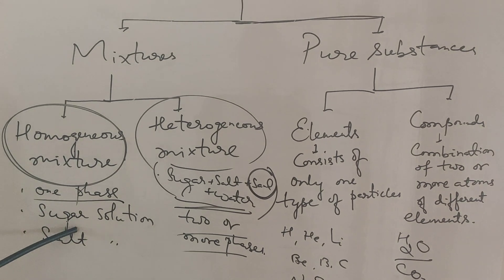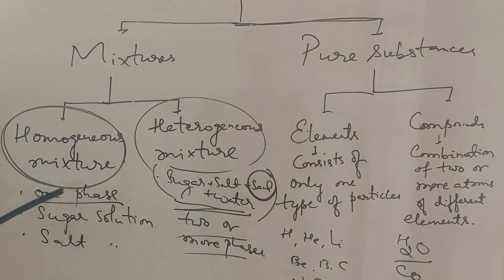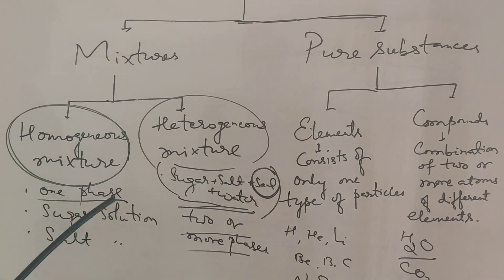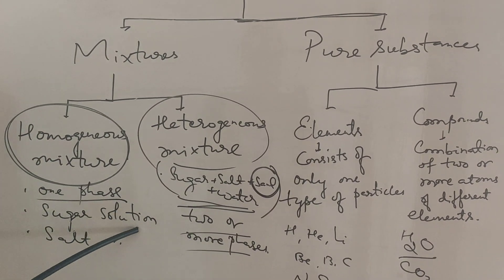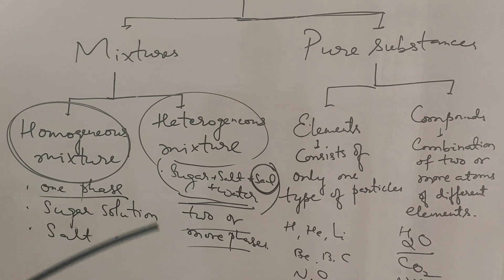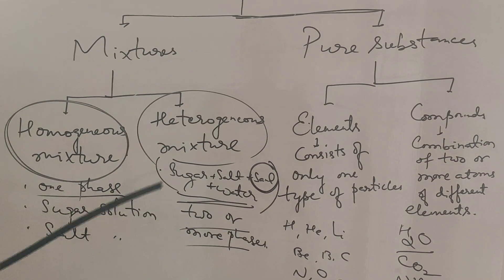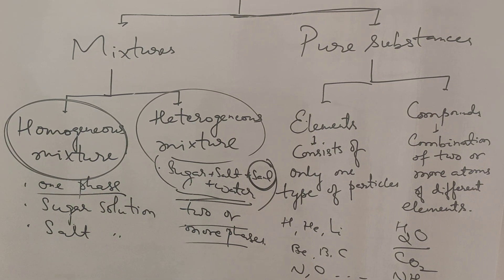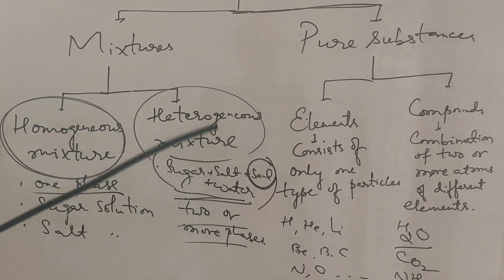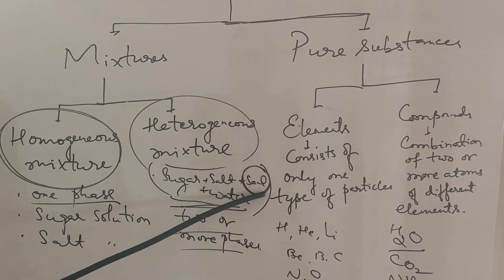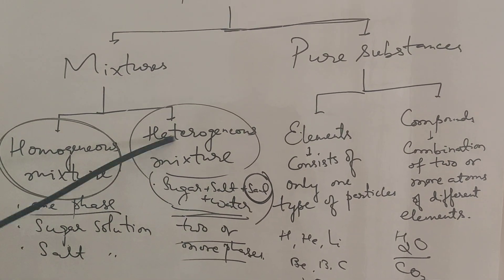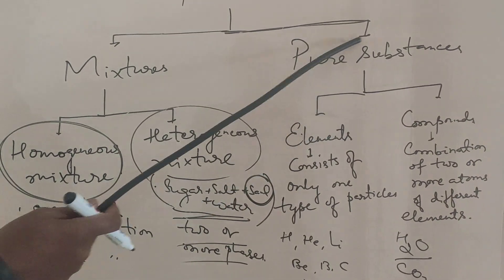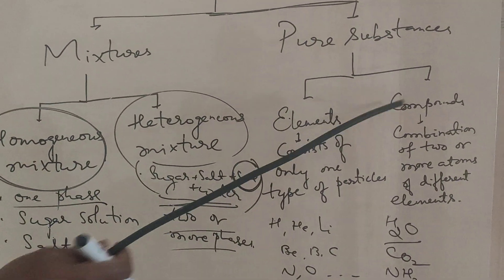In a homogeneous mixture like sugar solution or salt solution, sugar is the solute and water is the solvent. The solute is present in lower quantity (lower fraction) and the solvent is present in major amount (major fraction). Solute plus solvent forms a solution. Heterogeneous mixtures have two or more phases — like sugar, salt, sand, and water. Pure substances are classified into elements and compounds; elements consist of only one type of particle.